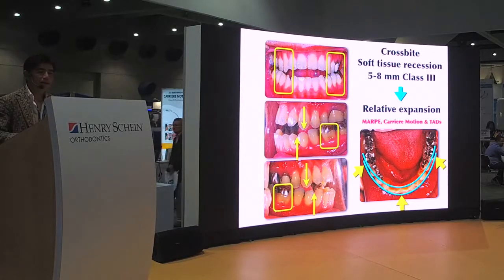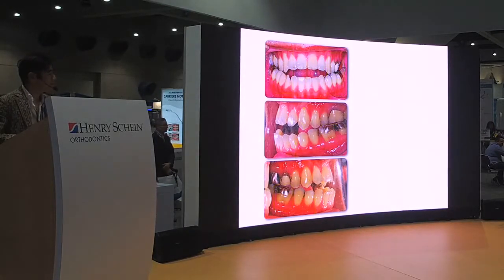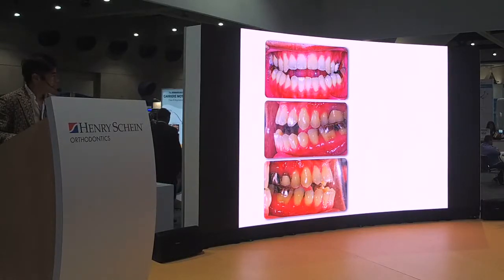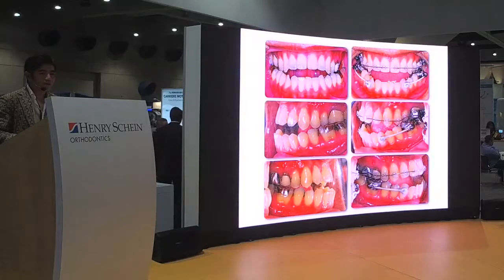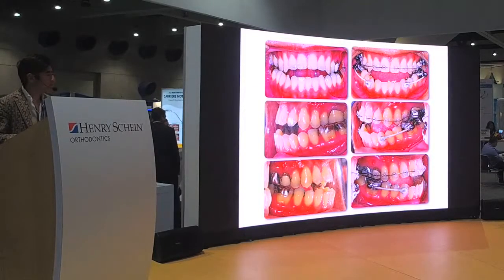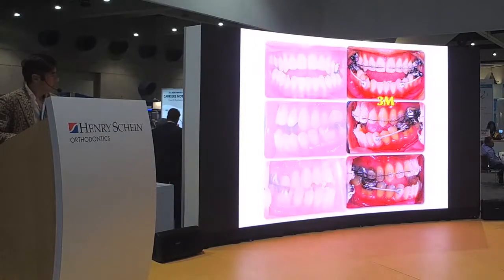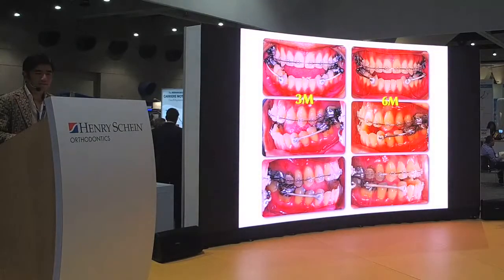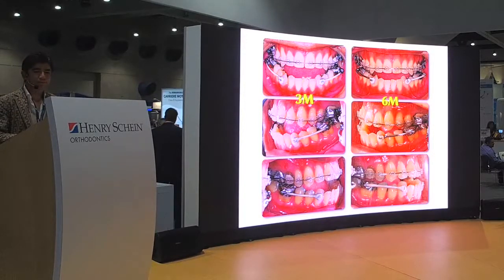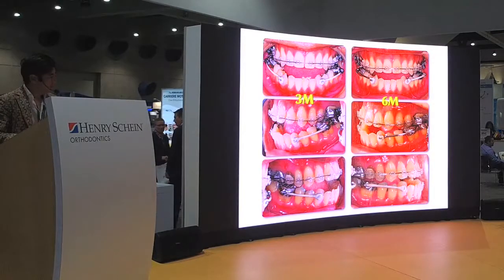At the end, we may need braces to finalize the case. So at the beginning of treatment, I placed the motion appliance on the lower. Then we put the brackets on and started Class 3 elastics to establish Class 1, because this is a very severe open bite. We used this mechanics for 6 months. The canine is almost sagittally Class 1, though they are still vertically in open bite. You can see some canine extrusion, which may be needed to close the open bite, and I felt this canine extrusion was sufficient.